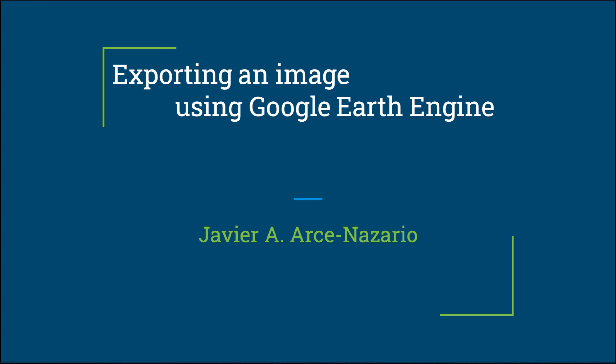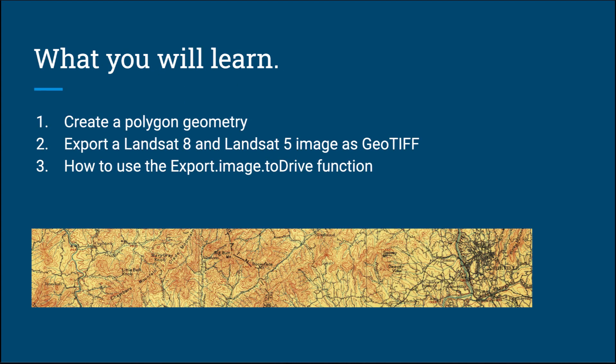Hello again. In this video I'm going to show you how to export an image using Google Earth Engine. Specifically, I'm going to show you how to create a polygon that we can use to clip Landsat 8 and Landsat 5 images, and we're going to export them as a GeoTIFF using the Export.image.toDrive function from Google Earth Engine.